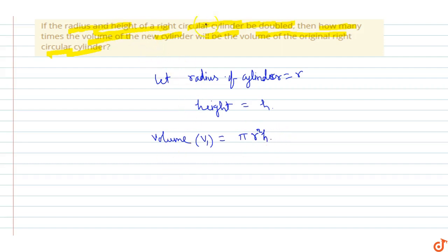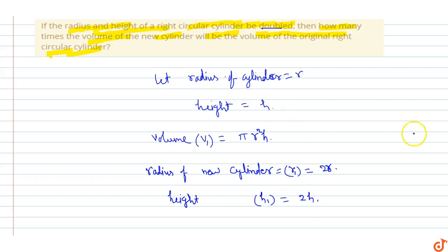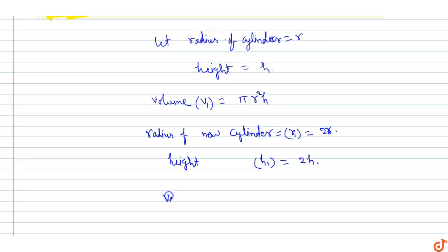Now, the radius of the new cylinder, suppose r1, is equal to 2 times R — double the original. The height of the new cylinder, suppose h1, is equal to double the original h, so h1 equals 2H.